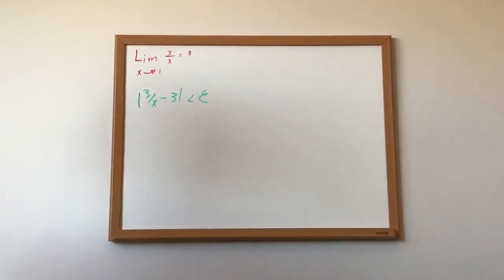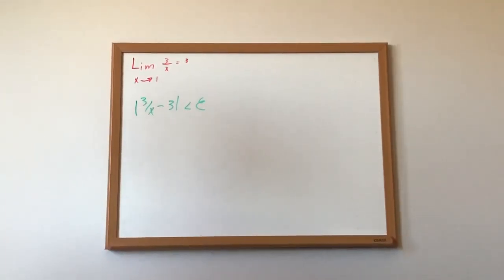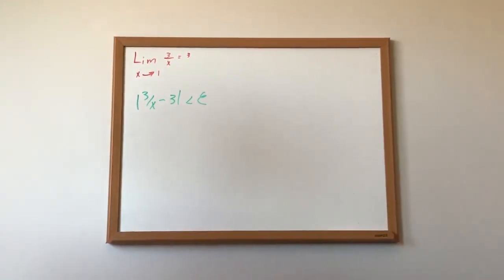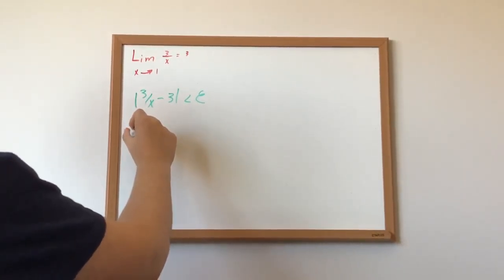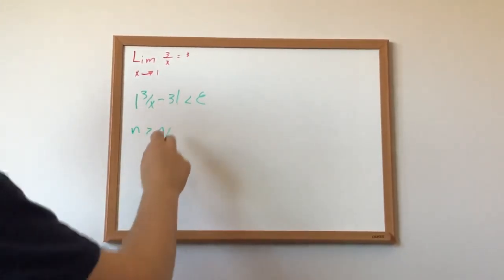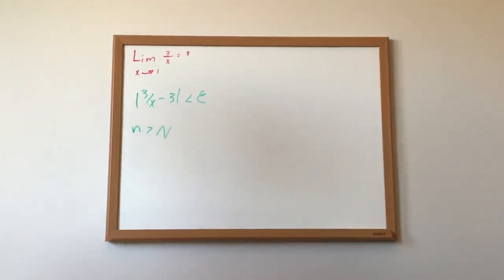And after evaluating the absolute value and the inequality, we want to get a format that is similar to this: n is greater than capital N, where capital N is just the epsilon.